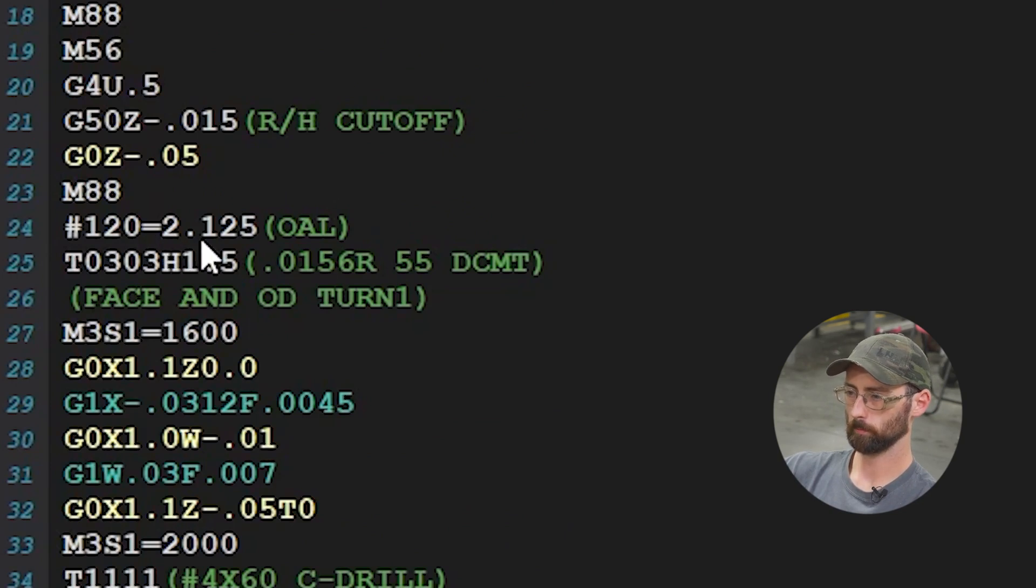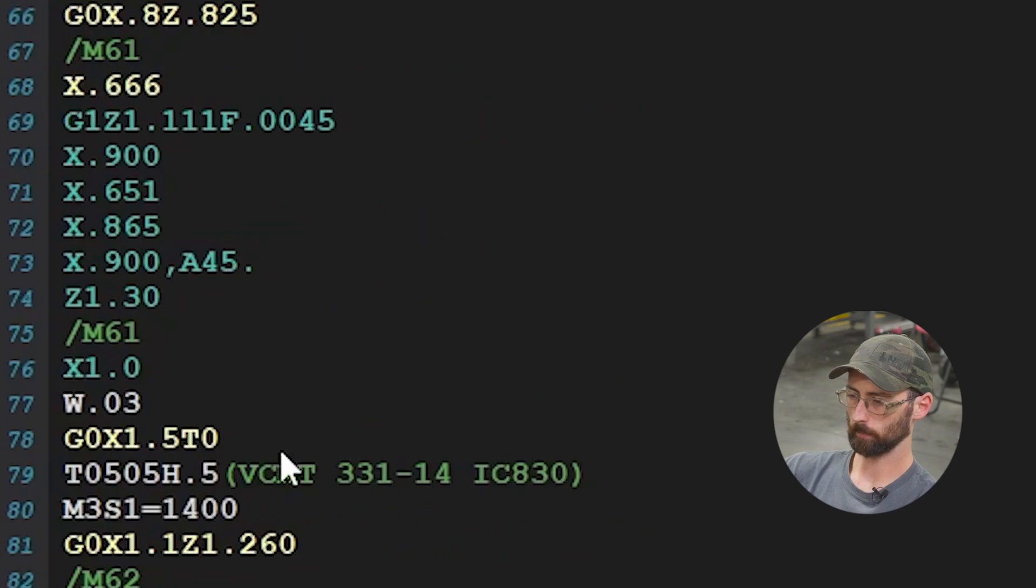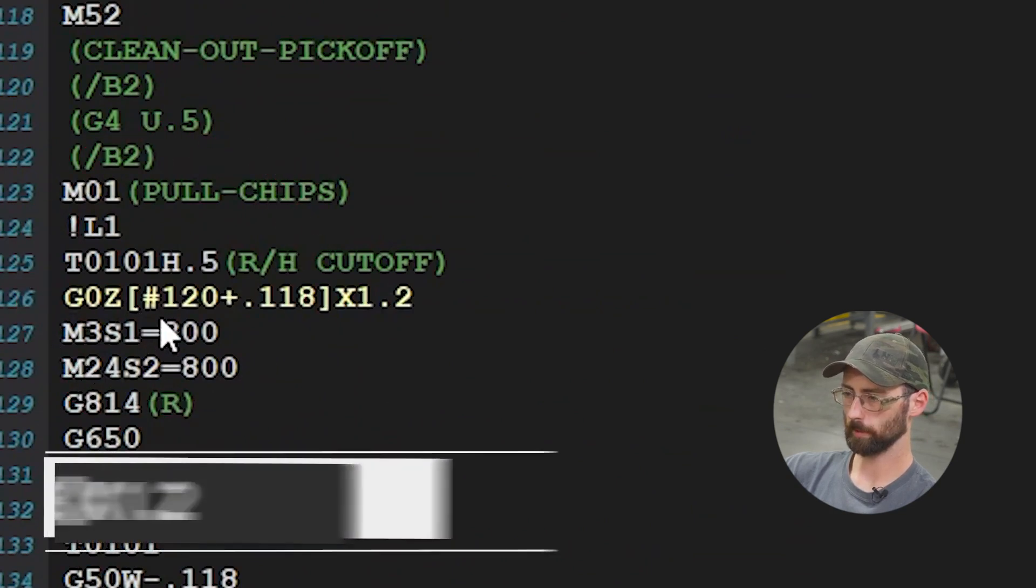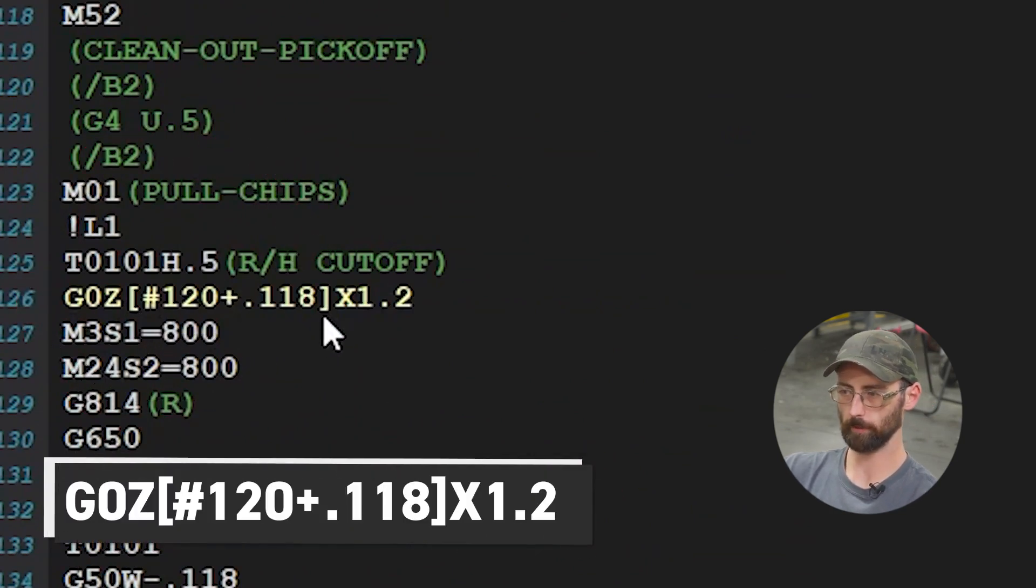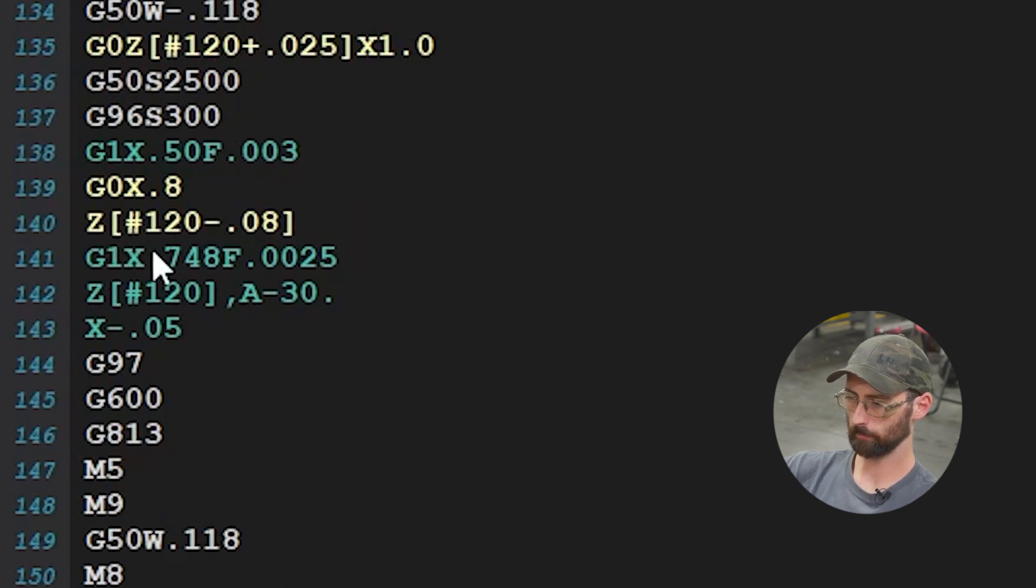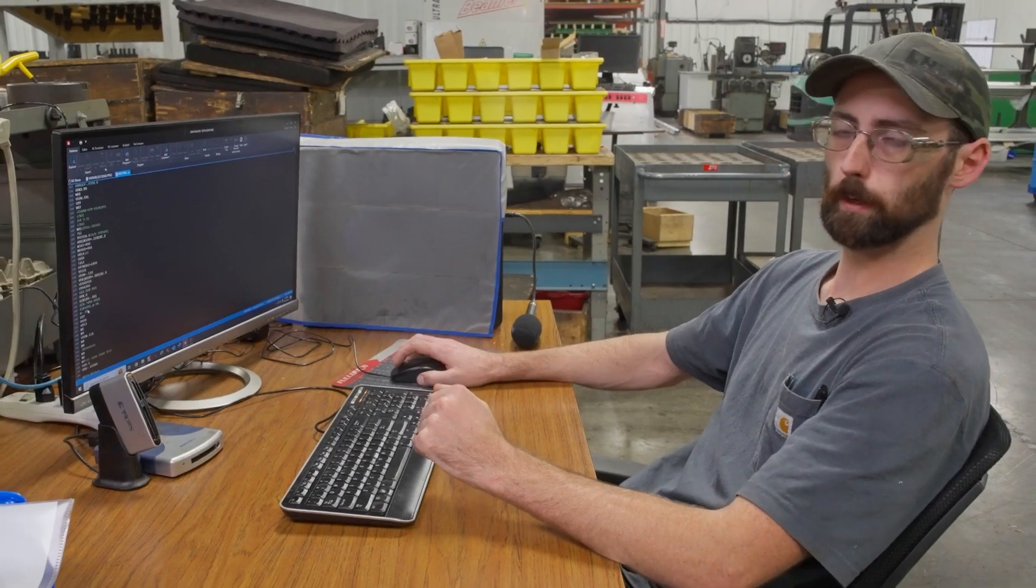We have #120 equals 2.125, a variable for our overall length. We're using that for our cutoff. You can see it here, G0Z120 plus 118, which is our cutoff insert width, a 3mm cutoff. We use that in multiple places and in mathematical statements. That's what's great about variables - you can add to them, subtract from them.